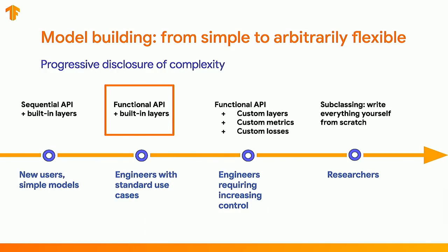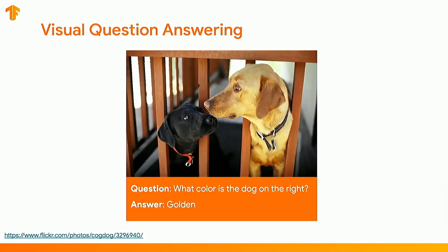The functional API is extremely powerful — it's for building DAGs, or directed acyclic graphs, rather than just stacks. I want to show you what a quick model would look like for visual question answering. A lot of the time when you start with deep learning, you spend time building image classifiers like cats and dogs. But we can look at a slightly more sophisticated model: VQA.